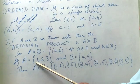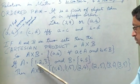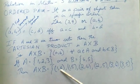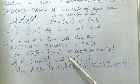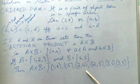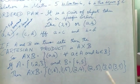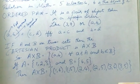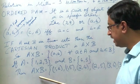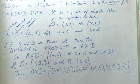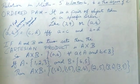Then A cross B is equal to (1,4), (1,5), (2,4), (2,5), (3,4) and (3,5). So this is the set comprising of the Cartesian product of A cross B.